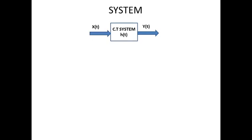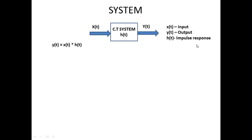First let us try to understand the relationship between the inputs, outputs, and impulse response in a continuous time system. A system is characterized by its impulse response h(t). If the input to the system is x(t), then the output of the system is y(t). Here x(t) is the input, y(t) is the output, and h(t) is called the impulse response. The relationship between input, output, and impulse response of a continuous time system is given by y(t) = x(t) convolved with h(t). The meaning of convolution will be covered in unit 2.